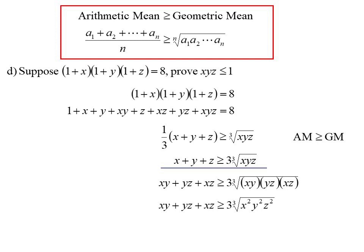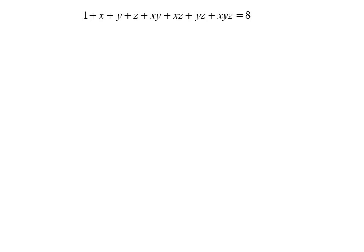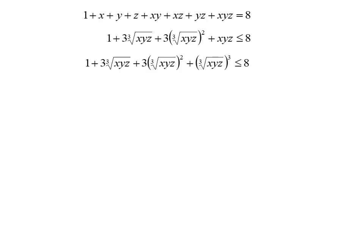With 1 plus X plus Y plus Z plus XY plus XZ plus YZ plus XYZ equal to 8, and substituting the lower bounds, we get 1 plus 3·∛(XYZ) plus 3·∛(XYZ)² plus XYZ is less than or equal to 8. The left-hand side has coefficients 1, 3, 3, 1 — it's (1 plus ∛(XYZ)) cubed. So (1 plus ∛(XYZ))³ ≤ 8, meaning 1 plus ∛(XYZ) ≤ 2, so ∛(XYZ) ≤ 1, therefore XYZ ≤ 1.